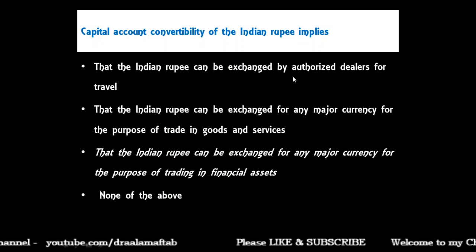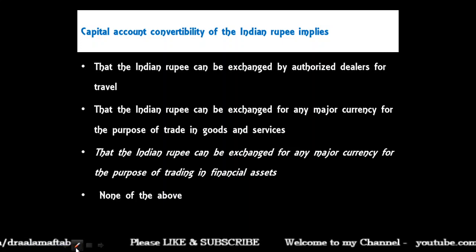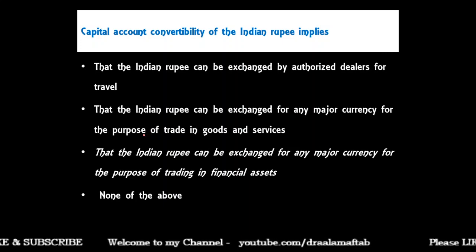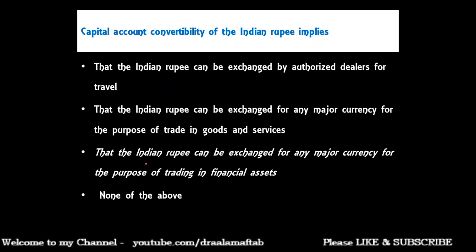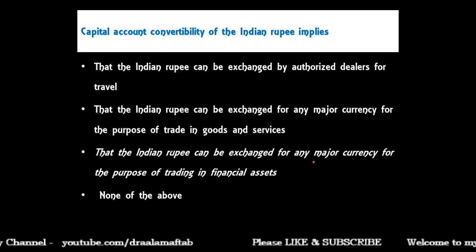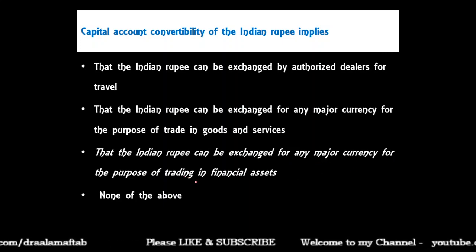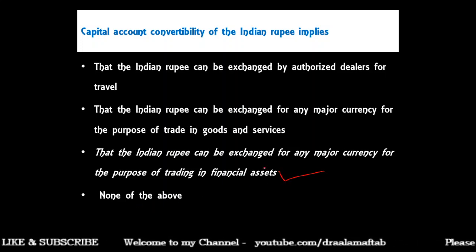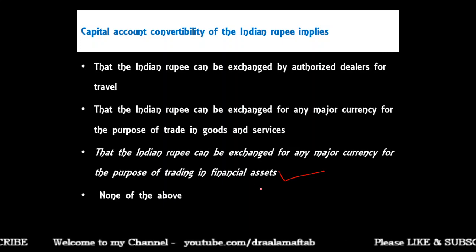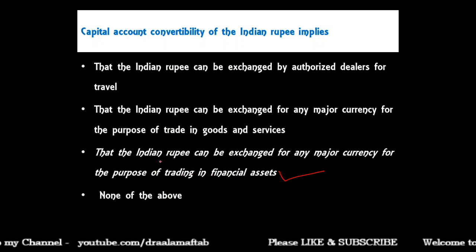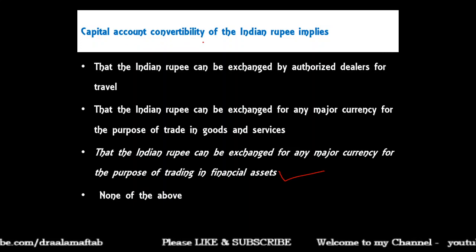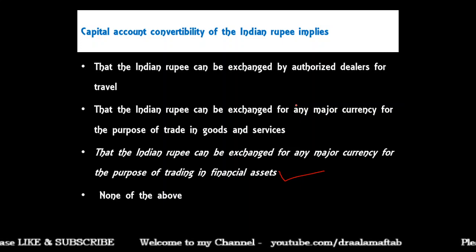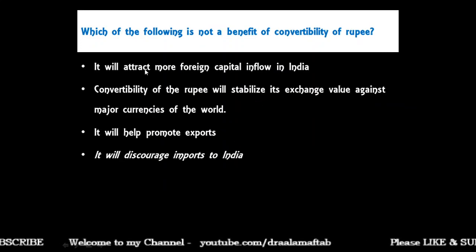Next: capital account convertibility of the Indian rupee implies — the rupee can be exchanged by authorized dealers for travel, the rupee can be exchanged for any major currency for trade in goods and services, or the rupee can be exchanged for any major currency for the purpose of trading in financial assets? The correct answer is the third option, as capital account includes all financial asset transactions. The first two options relate to current account convertibility.